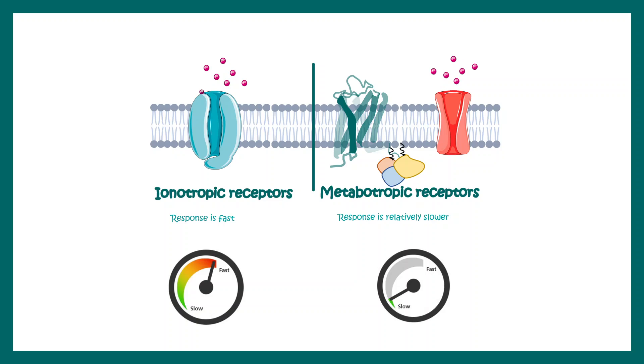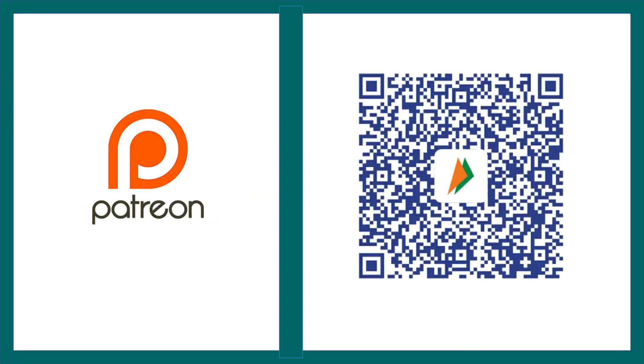So we can now appreciate the differences and similarities between ionotropic and metabotropic receptors, including where they are situated in our nervous system. I hope this video was useful.